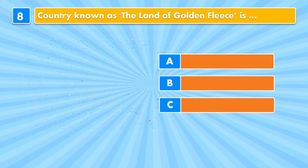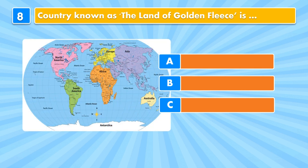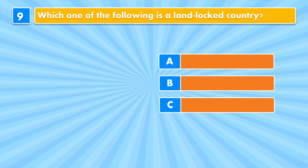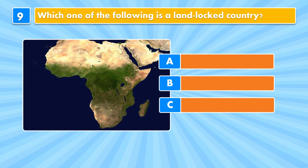Question eight: the country known as the Land of the Golden Fleece is France, Australia, or Britain? Answer: Australia. Question nine: which one of the following is a landlocked country — Tanzania, Gabon, or Zimbabwe?